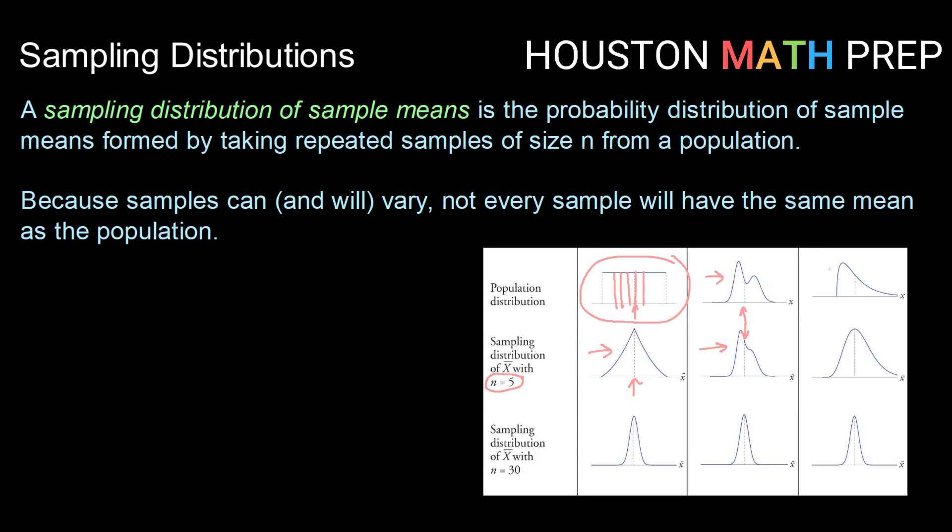Even if we take a nice left skewed distribution and do the same thing, take a bunch of samples of size 5, we might notice while our means stay about the same, we start to become less skewed, more symmetrical.